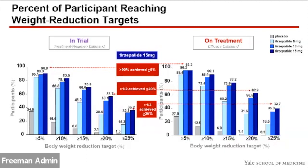For the exploratory greater than or equal to 25% weight reduction target, more than a third of participants reached this target, and on-treatment it was nearly 40% of individuals who lost a quarter of their body weight. To put this in perspective, if someone weighed 200 pounds and lost greater than or equal to 25% of their body weight, they would have weighed down to 150 pounds.